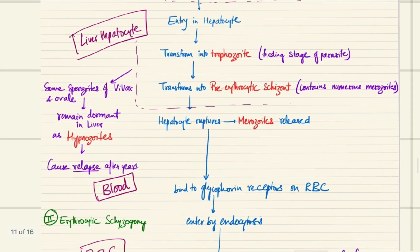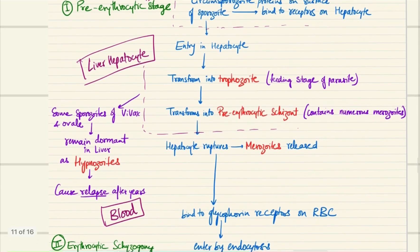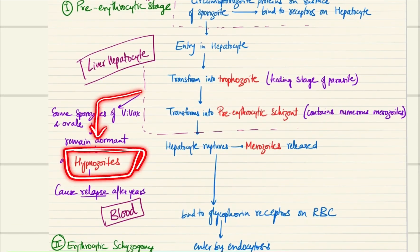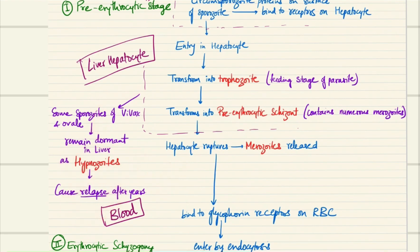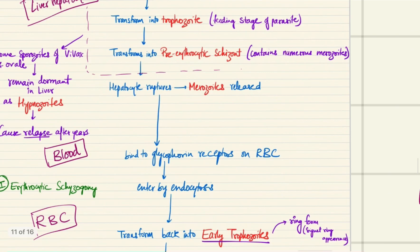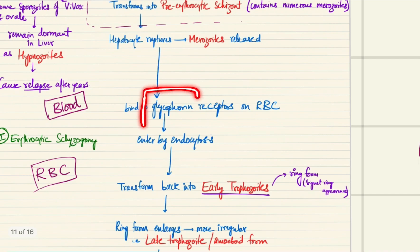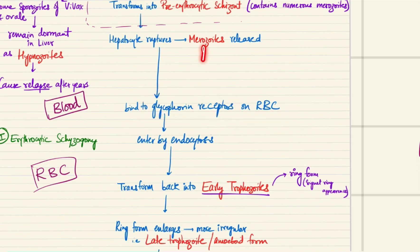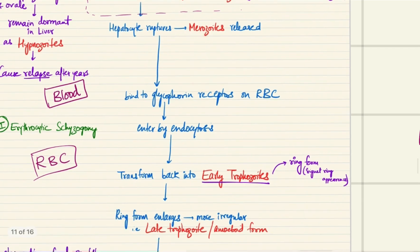At the same time, a side point: some sporozoites actually remain dormant in the liver and these are called hypnozoites. They can cause relapse infection after years, and these are only the sporozoites of Plasmodium vivax and Plasmodium ovale — important for PG exams. Now the merozoites which were released actually bind to glycophorin receptors on the RBC, gaining entry into the RBC by endocytosis.